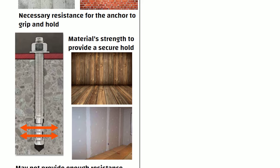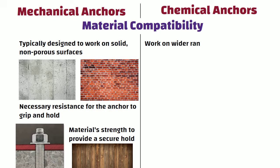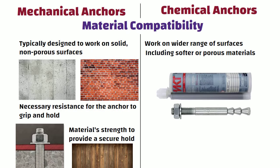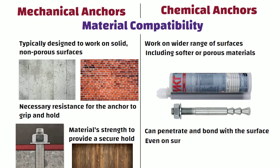On the other hand, chemical anchors can work on a wider range of surfaces, including softer or porous materials like wood and drywall. This is because the chemical resin used in chemical anchors can penetrate and bond with the surface, providing a strong hold even on surfaces that do not have a lot of strength or solidity.